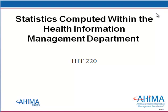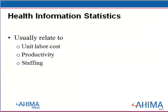In today's lesson, we will be covering chapter 9 in your statistics textbook. Stats that are computed for use within an HIM department usually relate to labor costs, productivity, and staffing. These are often used in determining whether the department can hire a new employee, set benchmarks for productivity, maybe looking at absentee rates of employees, and the list could go on and on — those are just a few examples.